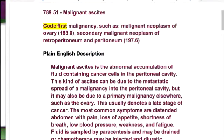A malignant ascites is the abnormal accumulation of fluid containing cancer cells in the peritoneal cavity — in other words, it's filling up the abdominal cavity with fluid. This kind of ascites can be due to the metastatic spread of a malignancy in the peritoneal cavity, but it may also be due to a primary malignancy elsewhere, such as the ovary. This usually denotes a late stage of cancer. The most common symptoms are distended abdomen with pain, loss of appetite, shortness of breath, low blood pressure, weakness, and fatigue.